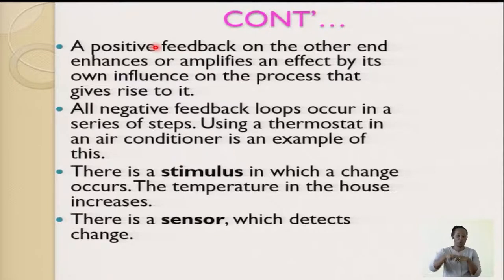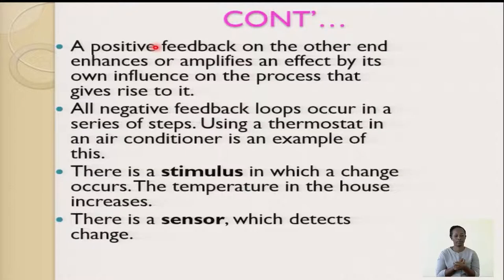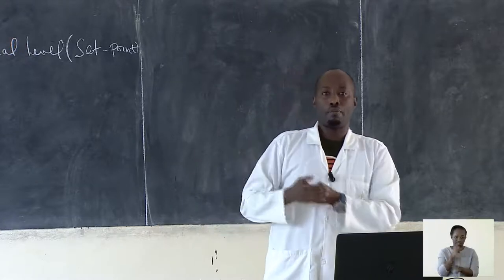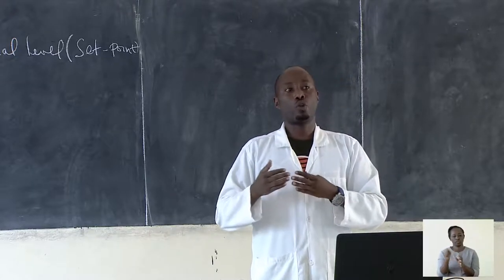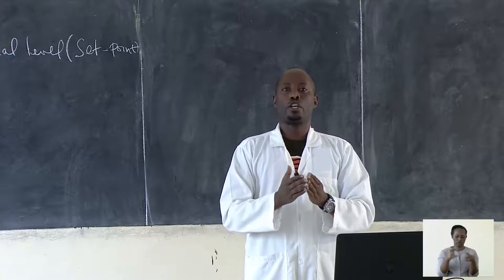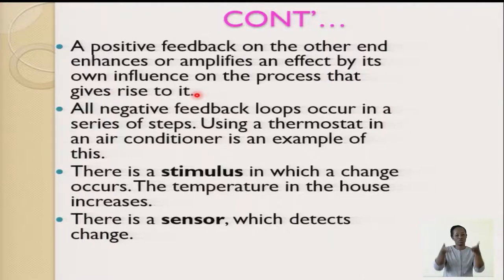Now let's have a positive feedback mechanism. Positive feedback is responsible for increasing the effect — it doesn't involve decreasing. An example is when a baby is sucking milk from the nipple of the mother: it stimulates the mammary gland to produce milk, and that milk is produced continuously. Another example is oxytocin hormone, which causes a continuous contraction of the uterus during childbirth. Positive feedback enhances or amplifies an effect by its own influence on the process that gives rise to it.